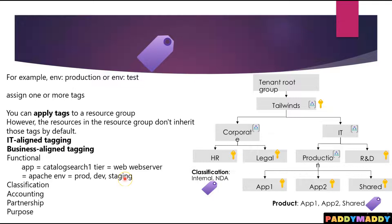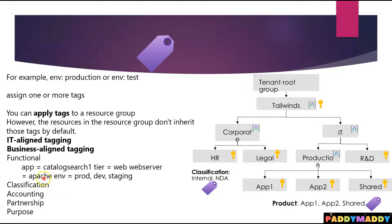Consider the types of tags required: functional, classification, accounting, partnership, and purpose. For functional tagging, an application tag might be 'catalog-search-one' for the application name, and tier tags like 'web server' or 'database.' For example, tagging web servers as 'Apache' allows you to run automation scripts across all Apache servers for patching, stopping, or additional configuration — including environment tags like 'production' or 'staging.'